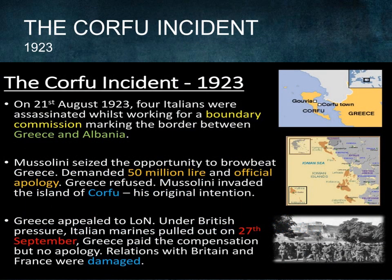The Corfu incident in 1923 involved Italy and Greece. Italy's ruler Benito Mussolini refused to accept the authority of the League. He overreacted to the news of the murder of Italian soldiers and used force to demand compensation from the Greek government. When this was not immediately forthcoming, he shelled and then captured the Greek island of Corfu.